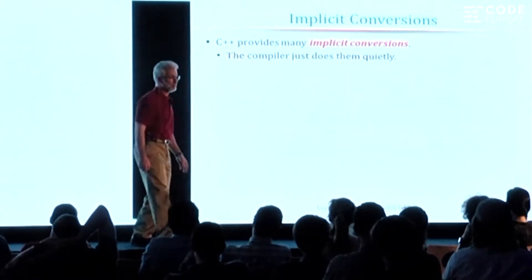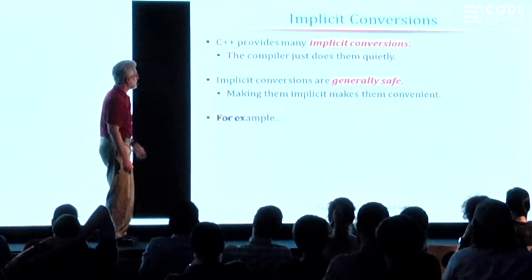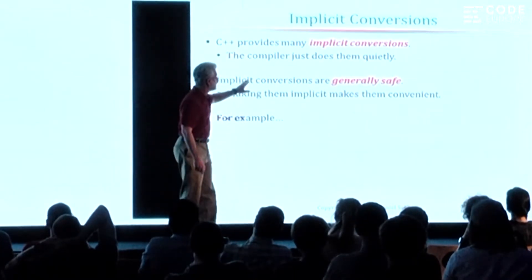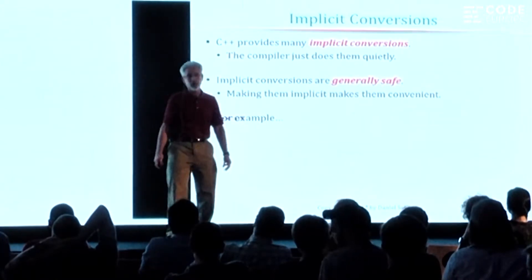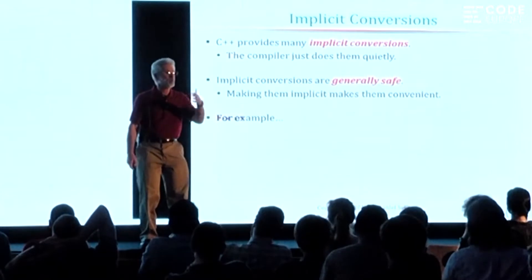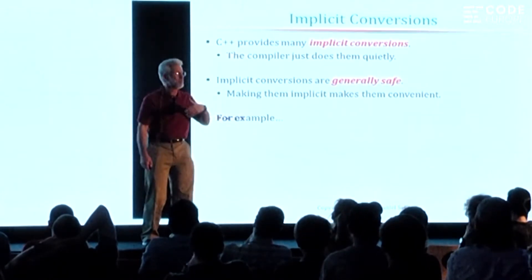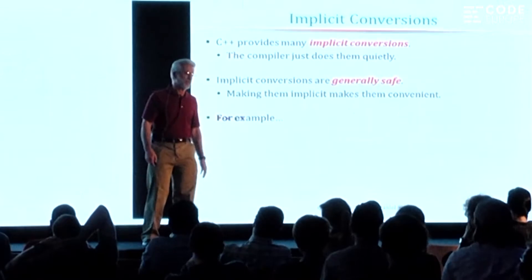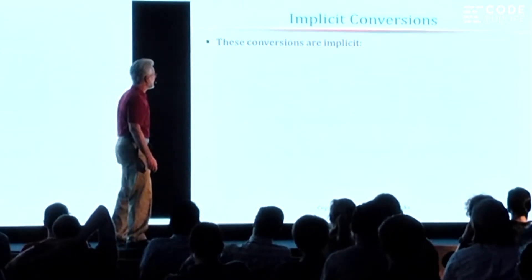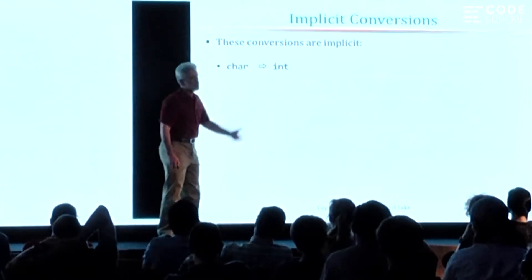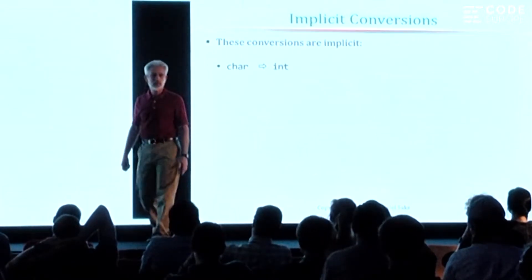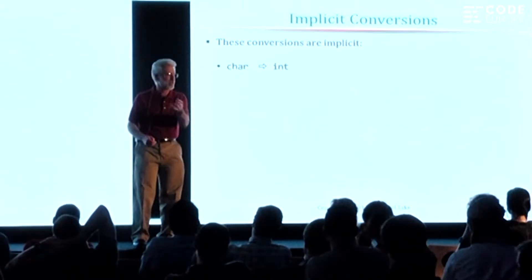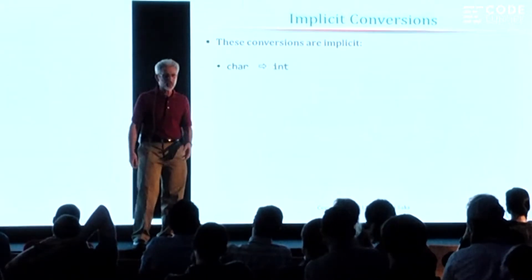The general rule is that implicit conversions are safe — the things that the compiler allows to happen quietly are things where it appears there is no loss of information. Once programmers know that implicit conversions can happen, they find that these conversions are unsurprising in their behavior. For example, converting a single character into an integer is an acceptable implicit conversion — there's no loss of information. An integer is always at least as big, has as many bits as a single character.